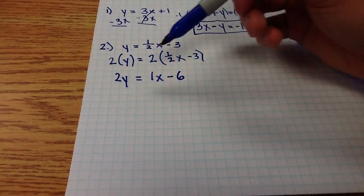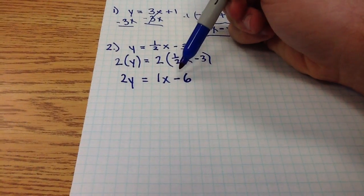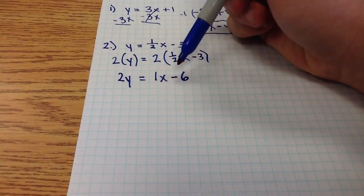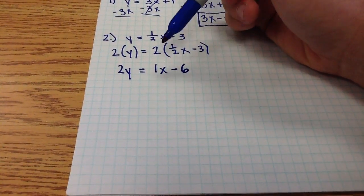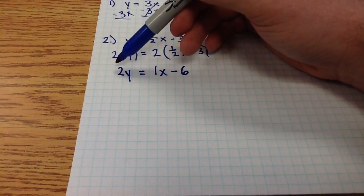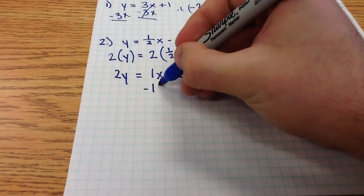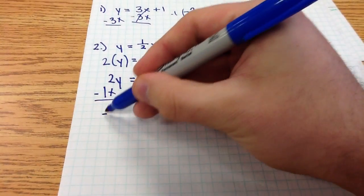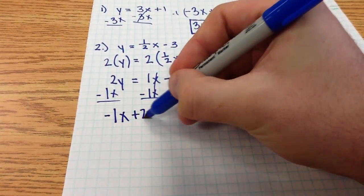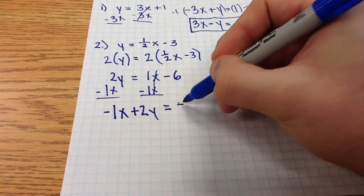And now looking at this equation here, I see that all of my coefficients and my constant here are integers. So I can simply bring this x over and get it in standard form through subtraction. So we get negative 1x plus 2y equals negative 6.